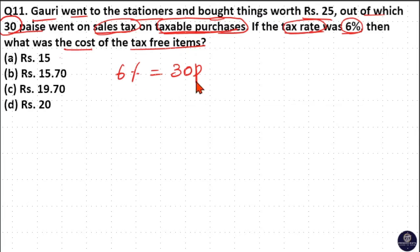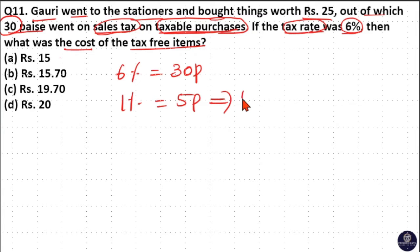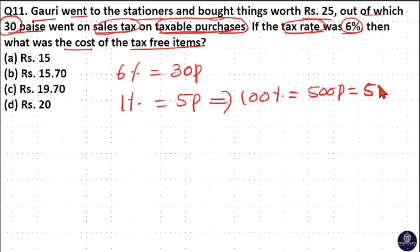6 goes 5 times in 30, so 1% is 5 paise, and 100% is 500 paise, which is equal to 5 rupees. So the cost of the taxable item is 100%, which is equal to 5 rupees.